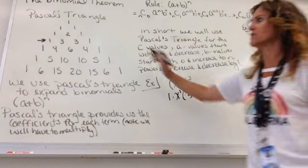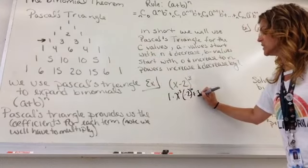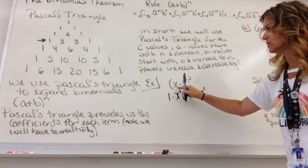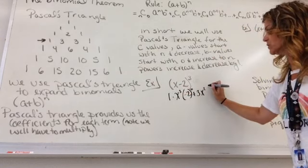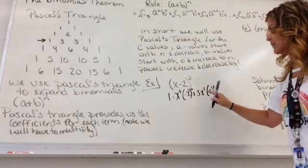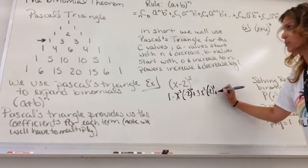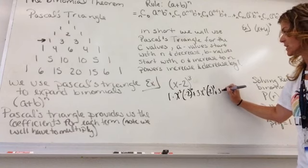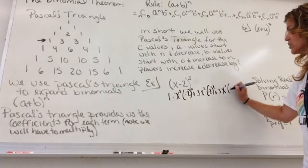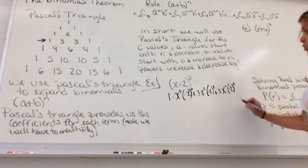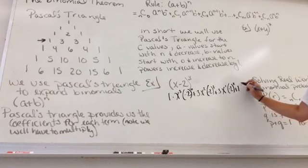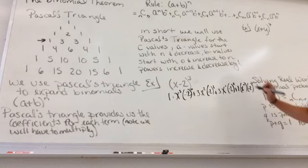Then we have plus. Our next value in Pascal's is a three. The x goes down. This is our a value. This is our b value. The negative two goes up. Notice, two plus one adds to three. Three plus zero adds to three. Then we have plus. The next value is a three. And the x goes down again. So it's x to the first. The negative two goes up, so that's squared. And then it ends in a one. x to the zero and negative two to the third.